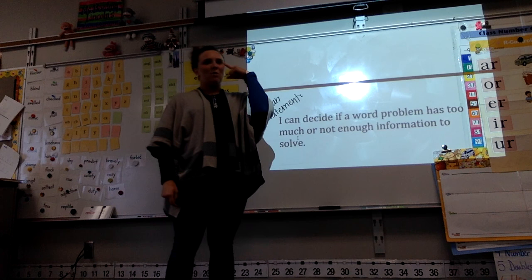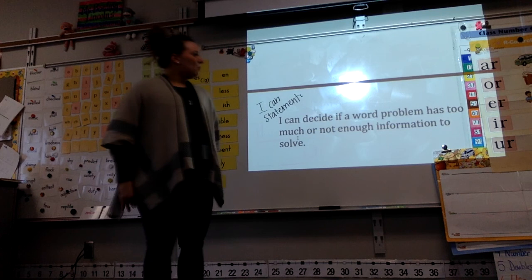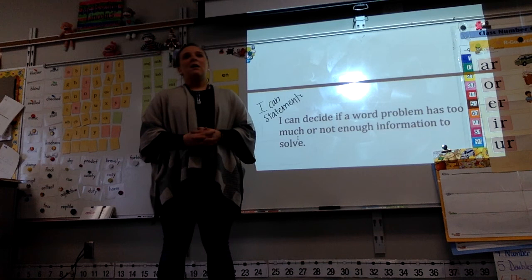What would you have to think to yourself? You'd have to think, well, mom, I don't know how many people are going to be eating dinner. So your mom would need to tell you that information. There's not enough information of what your mom told you. So that's an example of something that there's not enough information.